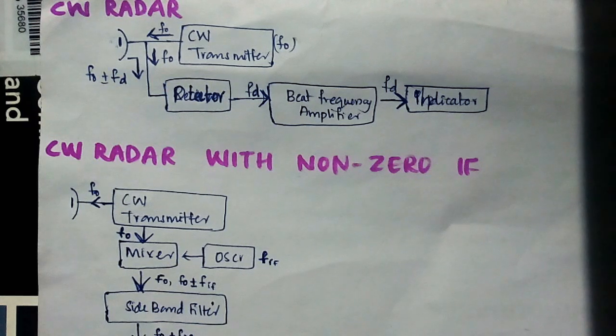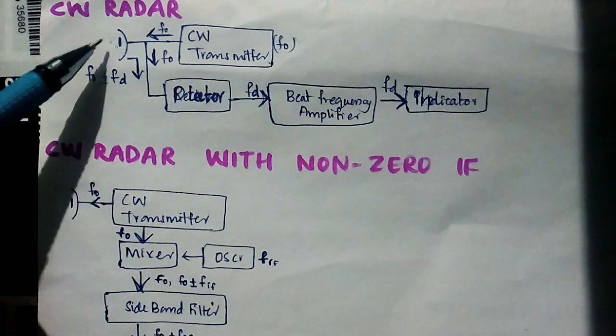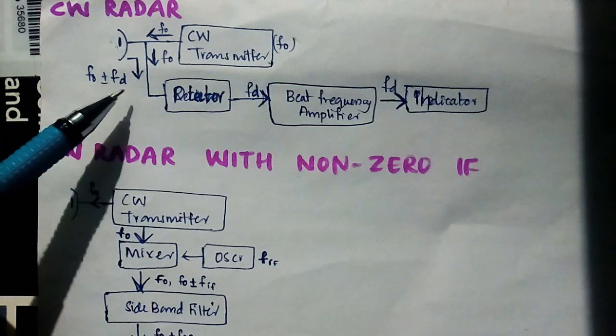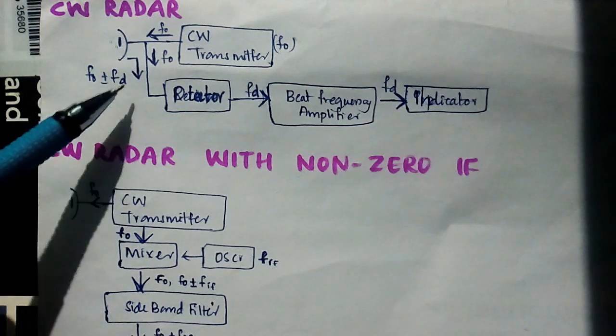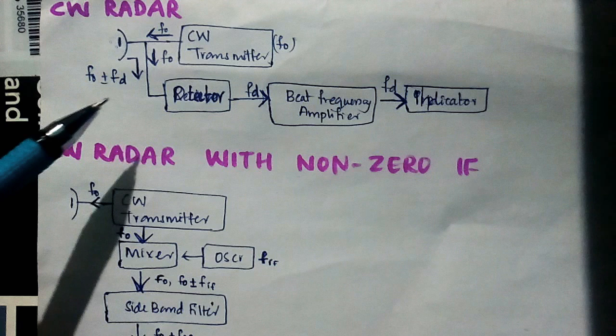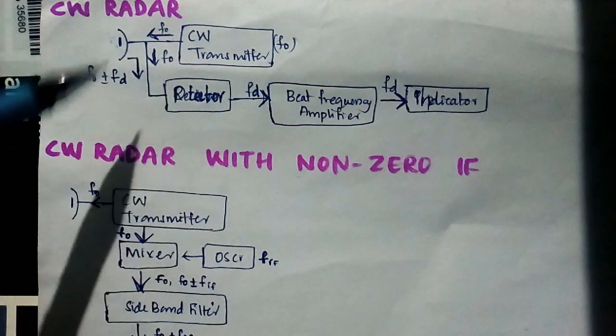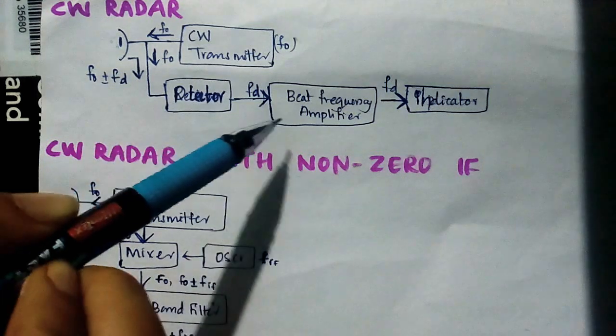In the first section we have the transmitting section with frequency f0, and the receiving section receives the echo signal at f0 plus or minus fd, where fd is the Doppler frequency. This receiving signal and the transmitted signal are compared by the detector, and the fd is given to the beat frequency amplifier.